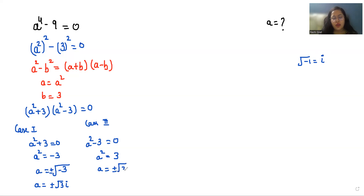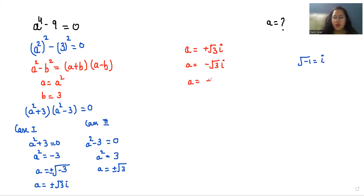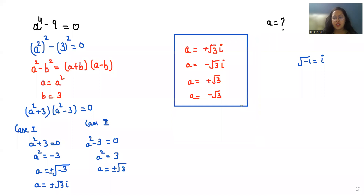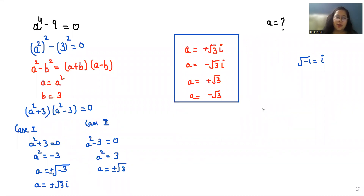Similarly, case two: a-squared minus 3 equals 0, so a-squared equals 3, giving a equals plus or minus root 3. So we have four values of a: from case one, positive root 3 iota and negative root 3 iota; from case two, positive root 3 and negative root 3. I hope it's clear and you find it useful — please give us a thumbs up and subscribe to my channel.